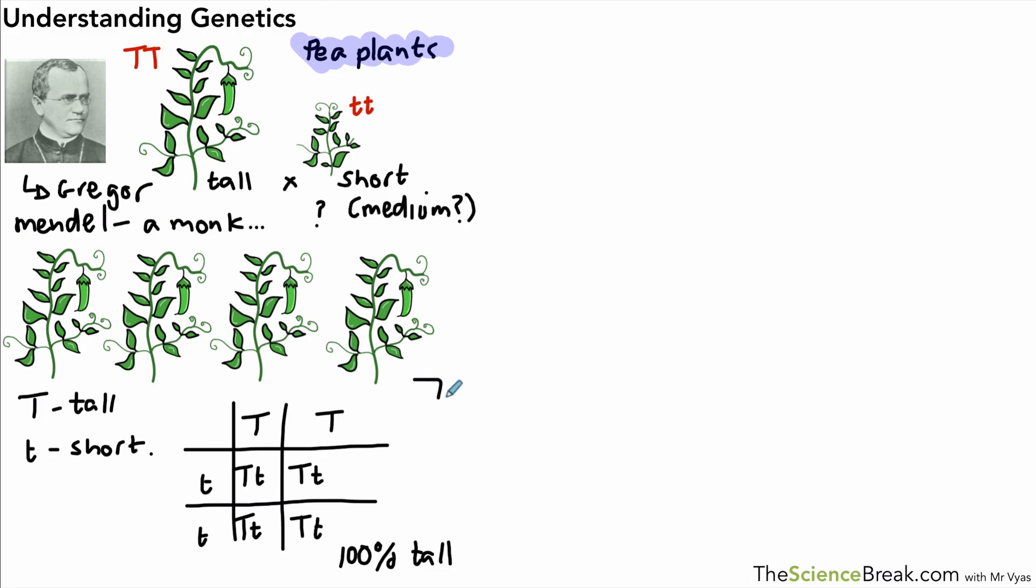The genotype of all these, as we've just said, is capital T and lowercase T. What would happen if you cross two of those together? If you cross those two pea plants together, we'll have a look at the answer for that at the end of the video. You might want to pause here and give that a go and check the answer at the end.